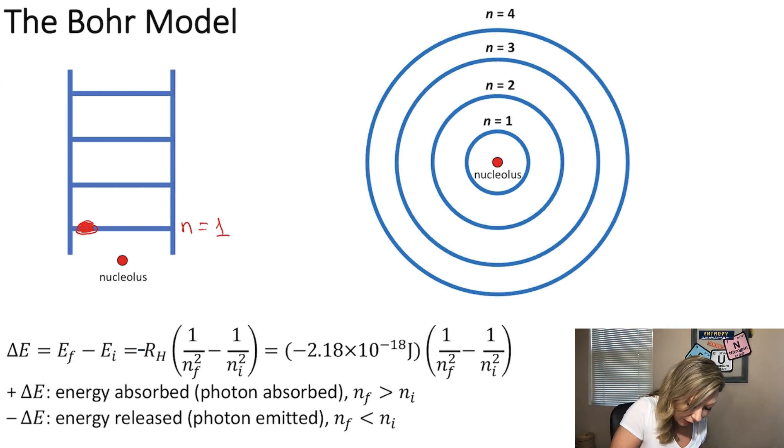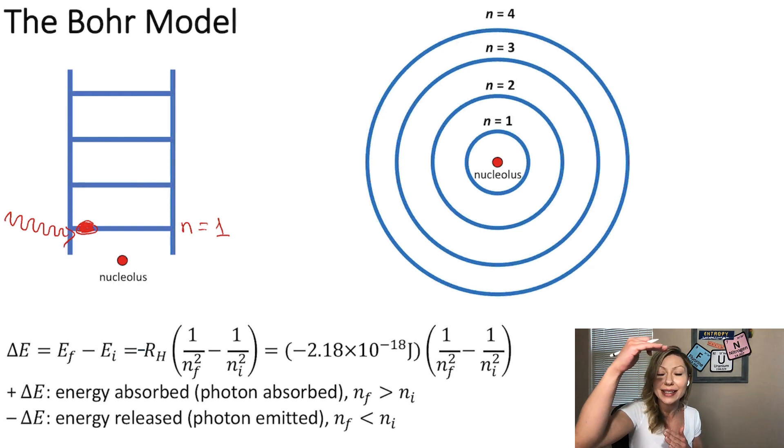You can have a photon with just enough energy hit that electron to make it get excited. So it's actually going to transition from the first ground state to one of the excited states. Let's say that it transitioned to N equals 4 to this excited state.